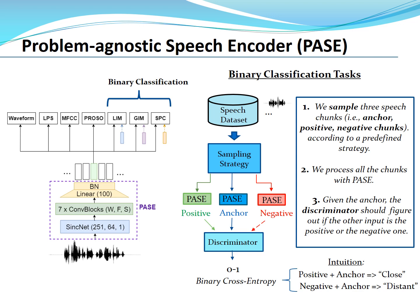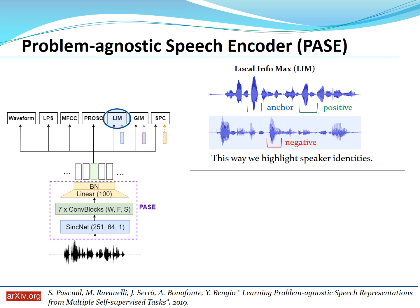I like to see the regression workers as a way to inject prior knowledge into the encoder. There are some speech representations we know a priori work very well, and it would be great to inject the information on these good representations into our encoder. This turns out to be very important because every time we have to solve a challenging task like self-supervised or unsupervised learning, good prior knowledge is really helpful. Binary classification workers follow a framework similar to local infomax. We sample three chunks — anchor, positive, and negative — according to a predefined sampling strategy, process them with our encoder, and employ a discriminator trained with binary cross-entropy to figure out if the input is a positive or negative sample.